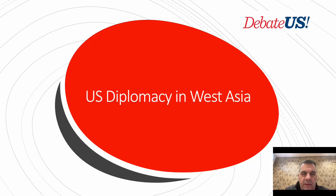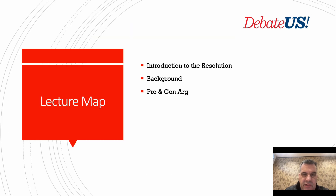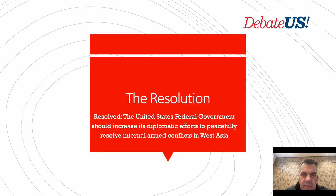Today's lecture will cover the January Public Forum topic related to U.S. diplomacy in West Asia. I'll introduce the resolution and discuss some terms, provide important background information, and then look at the pro and con arguments. The resolution is: Resolved, the United States federal government should increase its diplomatic efforts to peacefully resolve internal conflicts in West Asia.